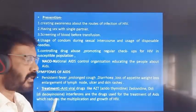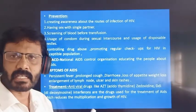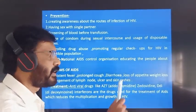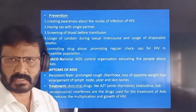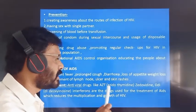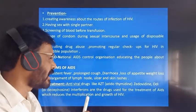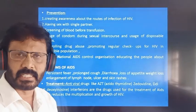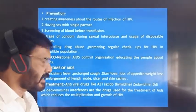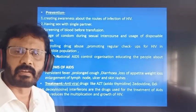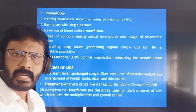Treatment of AIDS: Antiviral drugs like AZT (azidothymidine), ddC, and dideoxyinosine, interferons — these are the drugs used for the treatment of AIDS which reduce the multiplication and growth of HIV by reducing the reverse transcription process. However, there is no permanent cure for HIV.